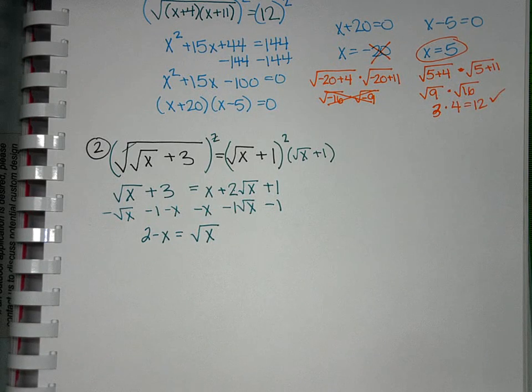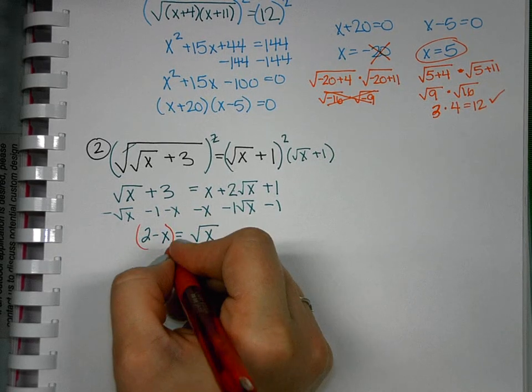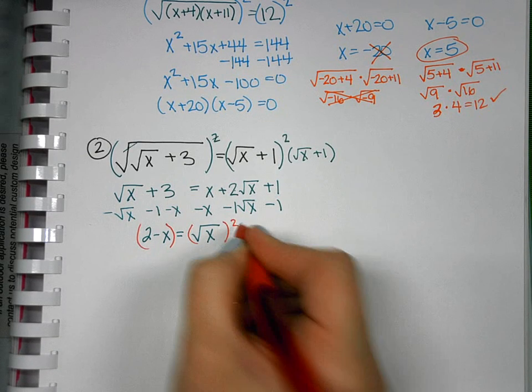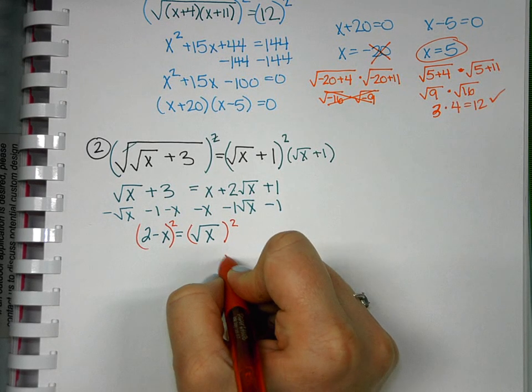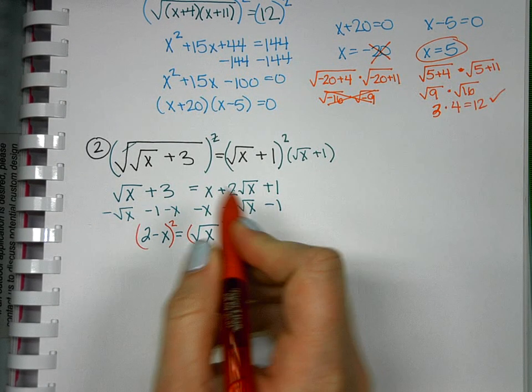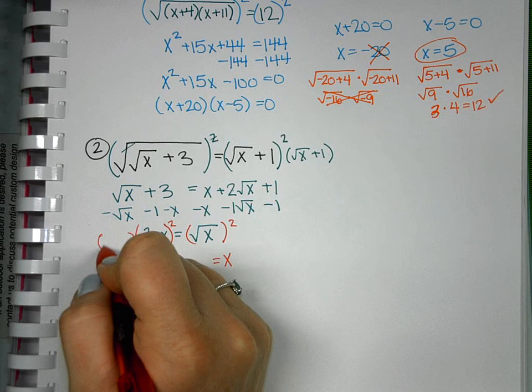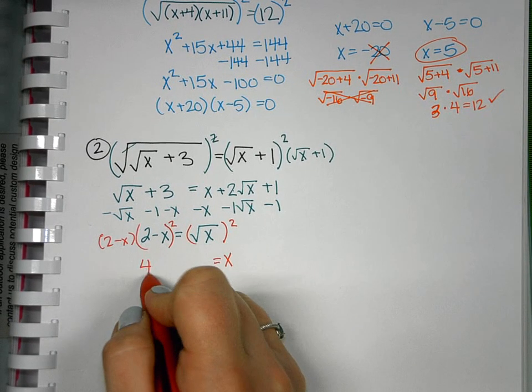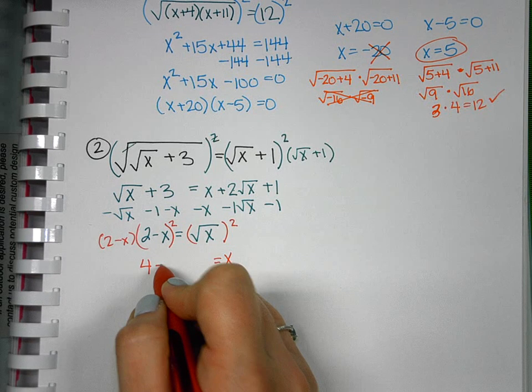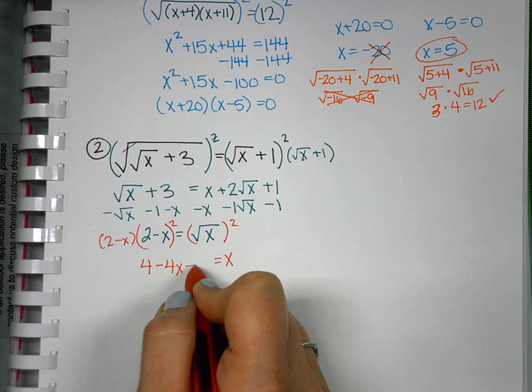Because they're like terms, because the radical is the same, we just add the numbers in front. So now we get to square both sides again, now that our other radical is isolated. On the right, we'll get x, and then on the left, we have to write it out twice and foil it. So 4 minus 4x plus x squared.